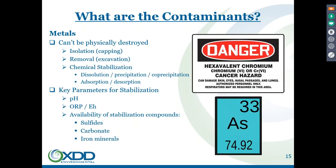Let's talk about some of the other contaminants — metals. Metals are unique compared to organic contaminants. Organic contaminants can be easily destroyed — you break apart the carbon, hydrogen, and whatever else is in the compound, and they can be broken into elemental compounds fairly readily. Metals cannot be destroyed — it's an element.